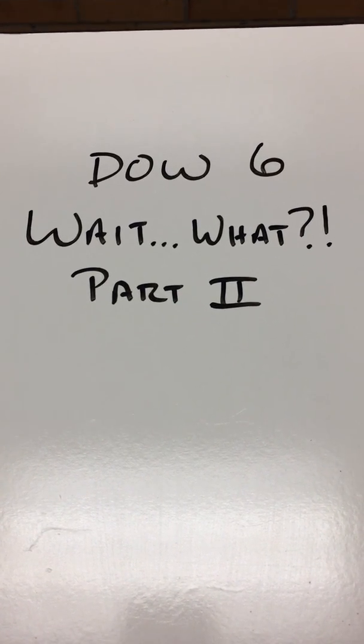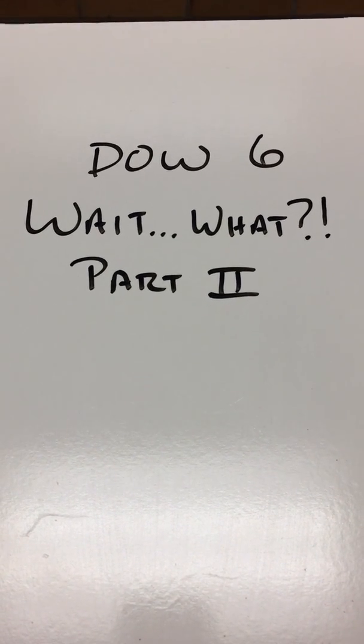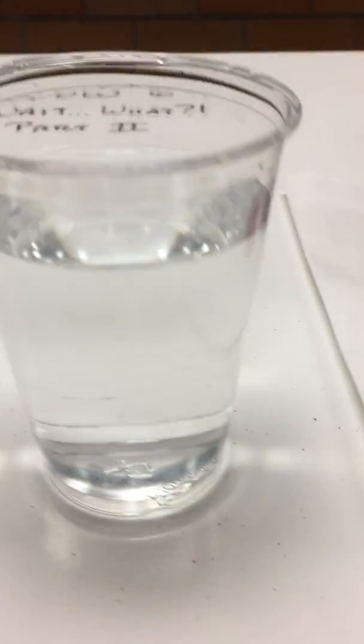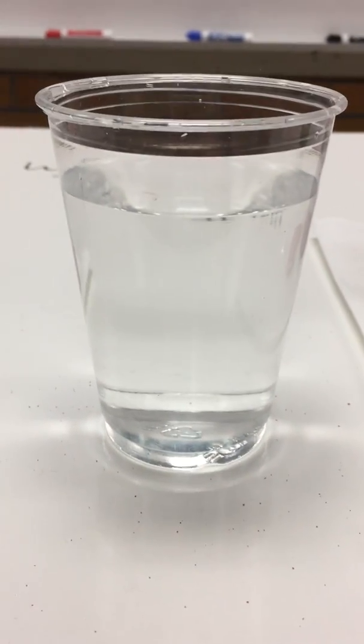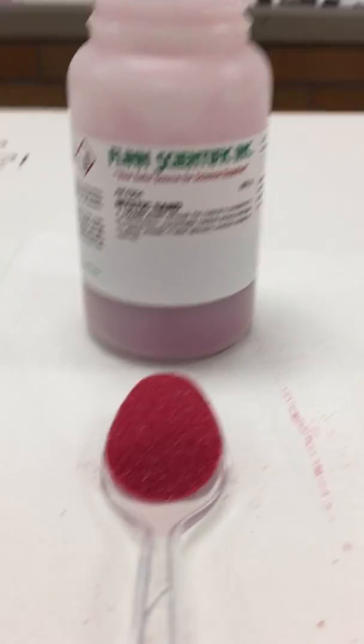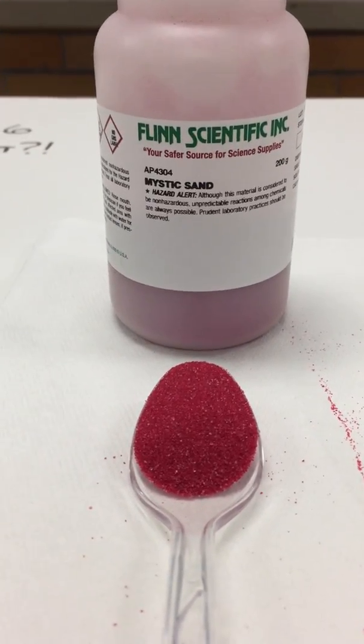This is DOW number six. Wait, what? Part two. Our materials this week, we have a cup, a little water, just regular tap water, and then we have our mystic sand.